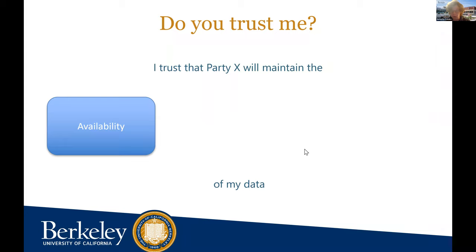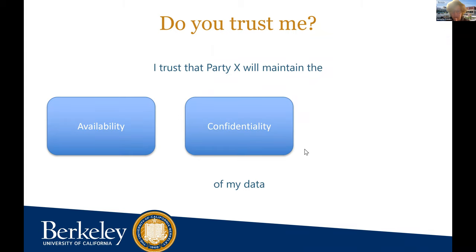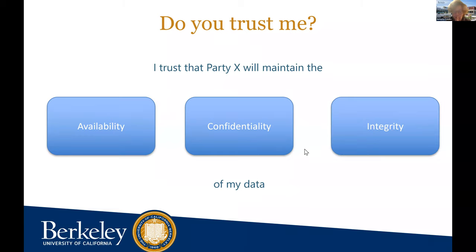By trust I really mean three things. First, who can I trust to maintain the availability of my data — will I be able to obtain my data when I want it? As we've seen with recent outages in AWS, this isn't always straightforward. Second, who can I trust with the confidentiality of my data? For example, I watch way too many baking shows — I don't necessarily want the cloud to know just how much time I spend watching the Great British Bake Off.